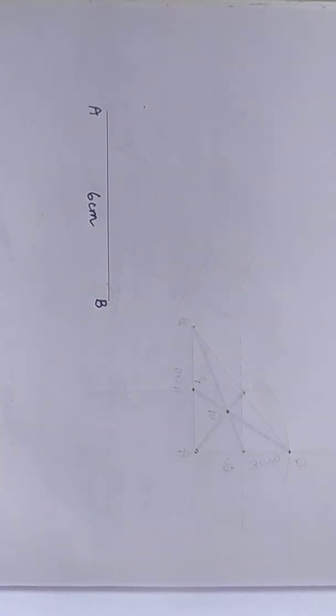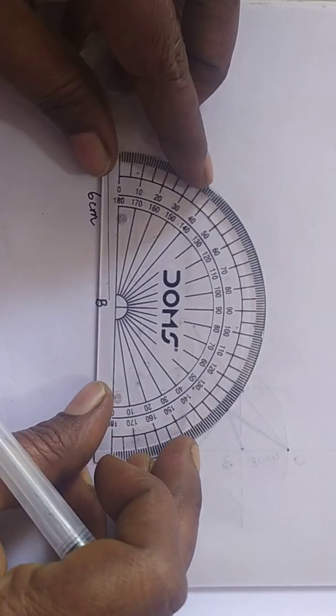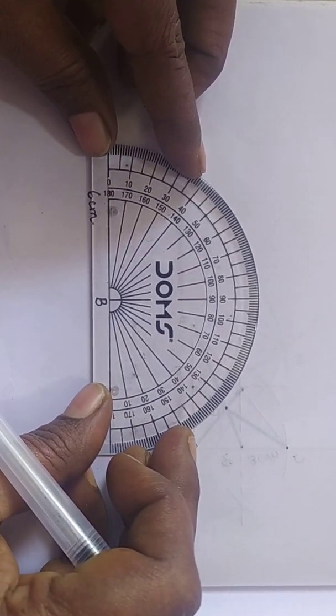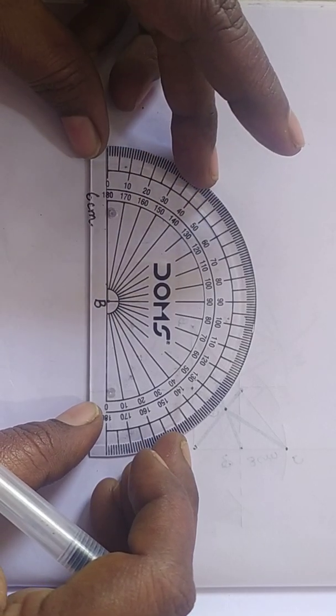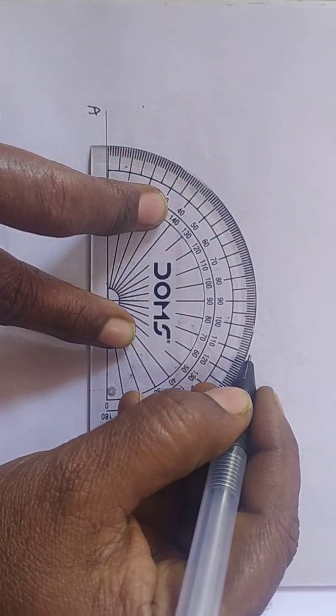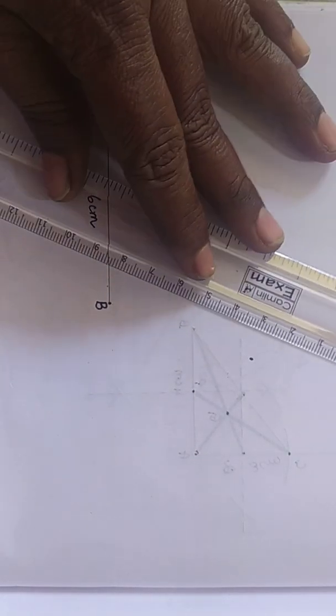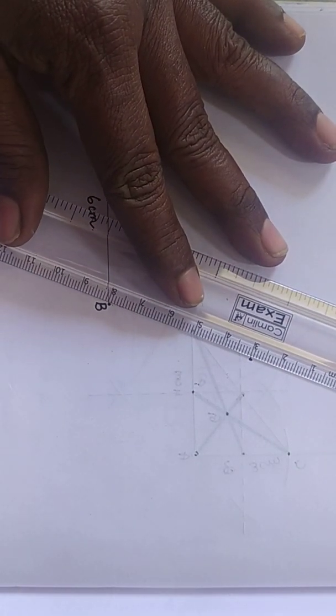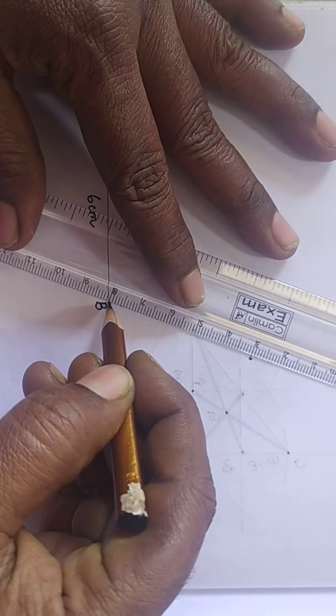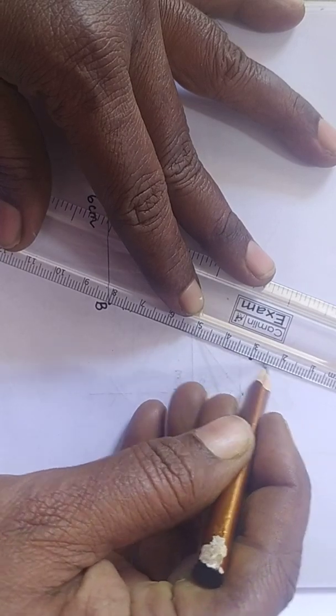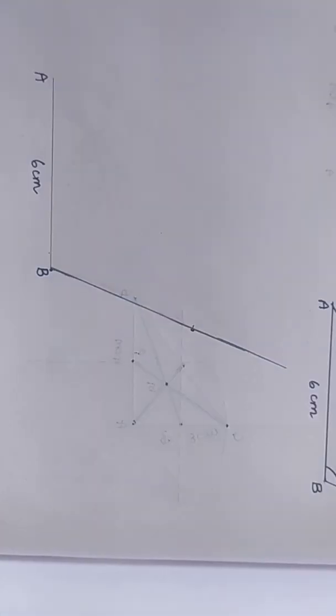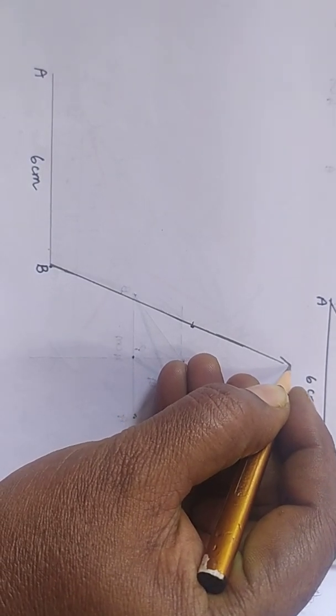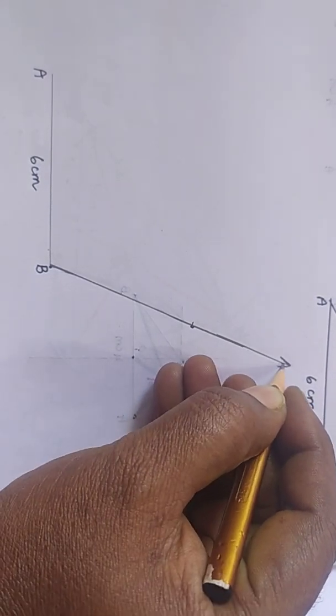Then, with B as center, take 110 degrees. Keep the protractor at point B. Place the protractor like this. Take 110 degrees. Remove the protractor and join. You can extend this angle.